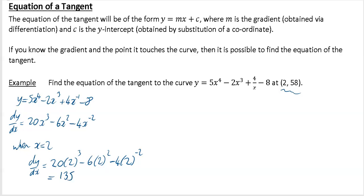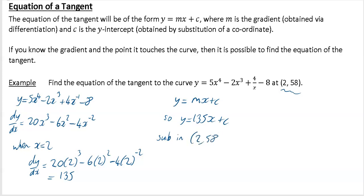This is the gradient. Now remember, if we're finding a tangent, a tangent has the general form y equals mx plus c. We now know the gradient is 135, so it's y equals 135x plus c. How you find c is you then have to substitute in the other point that you know which is on the tangent, which is the point (2, 58).